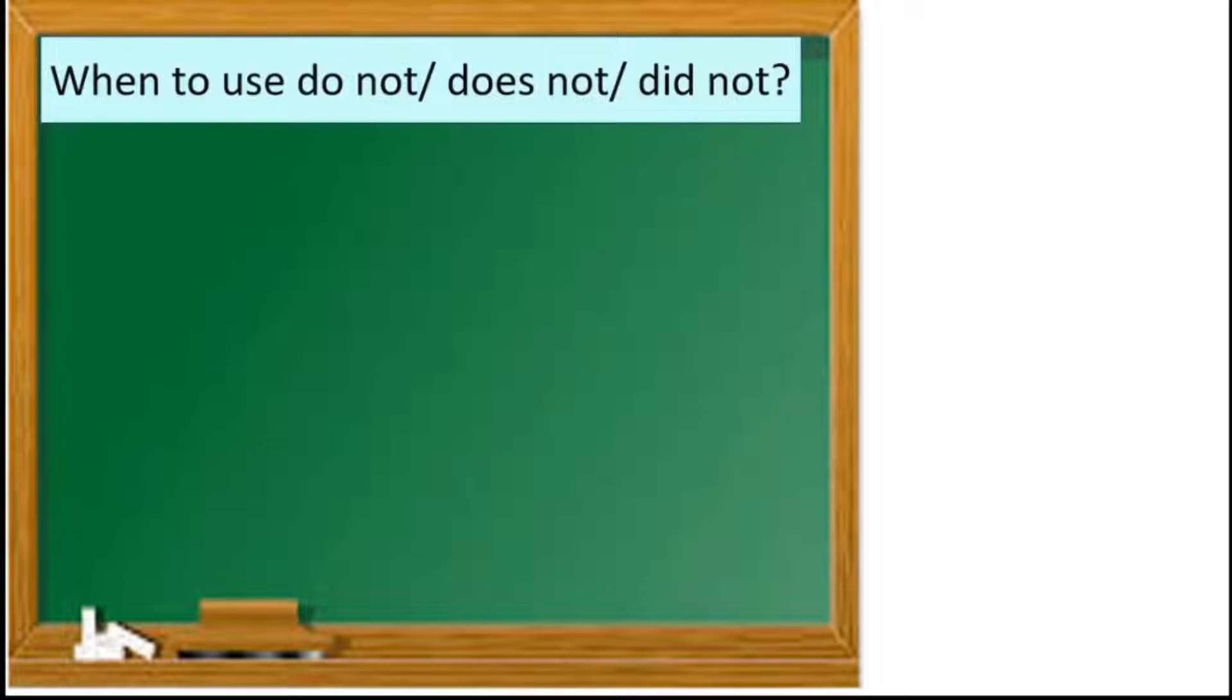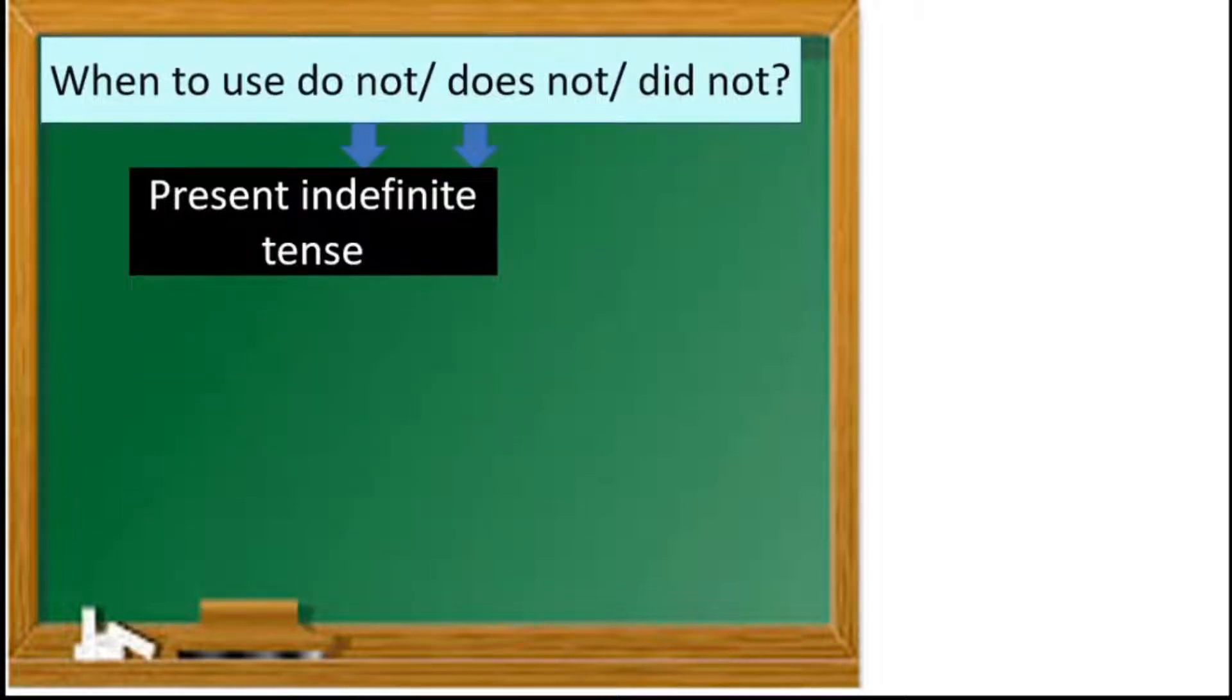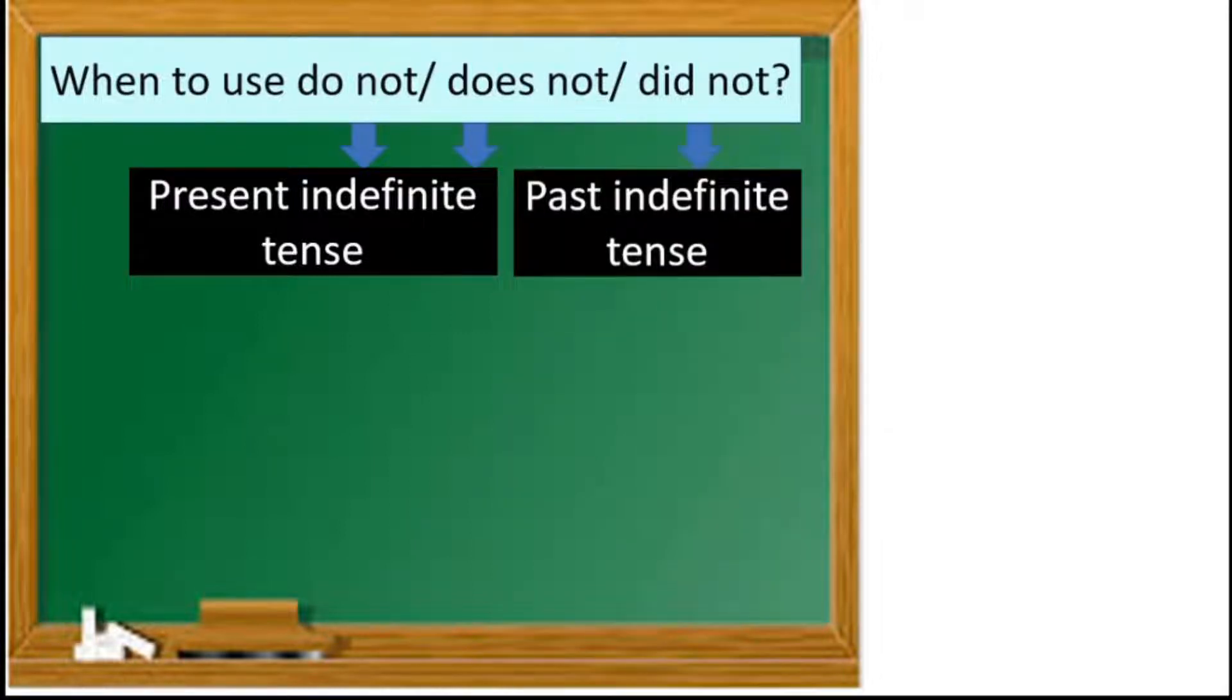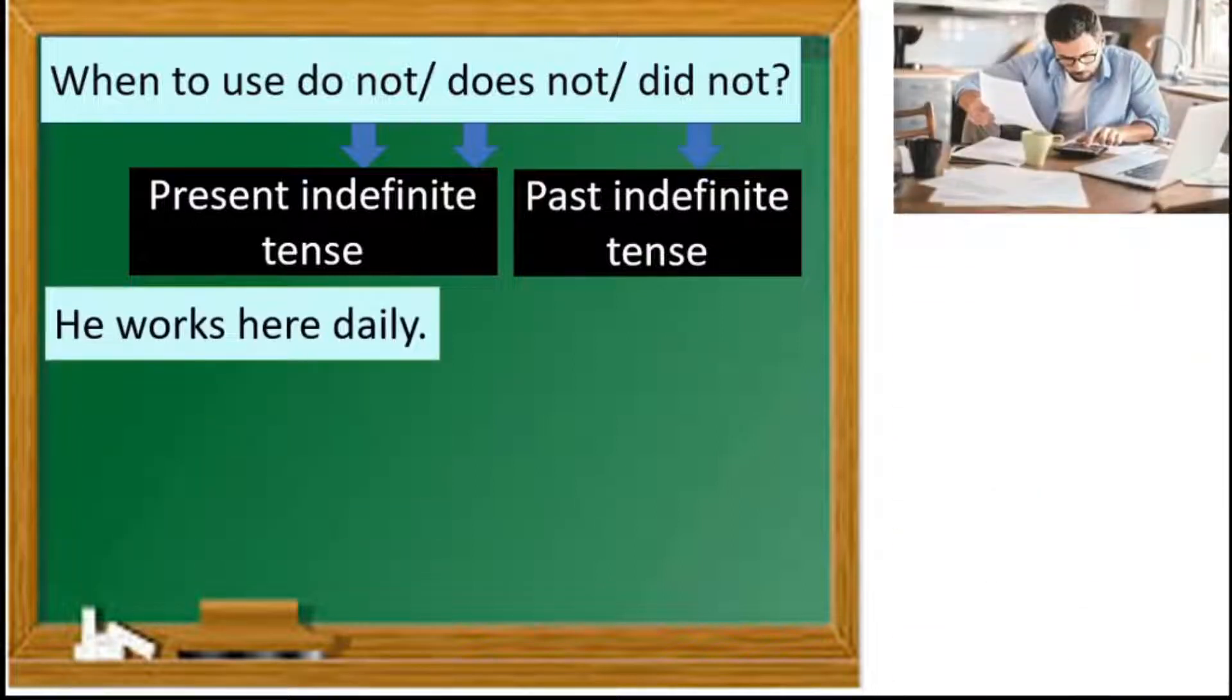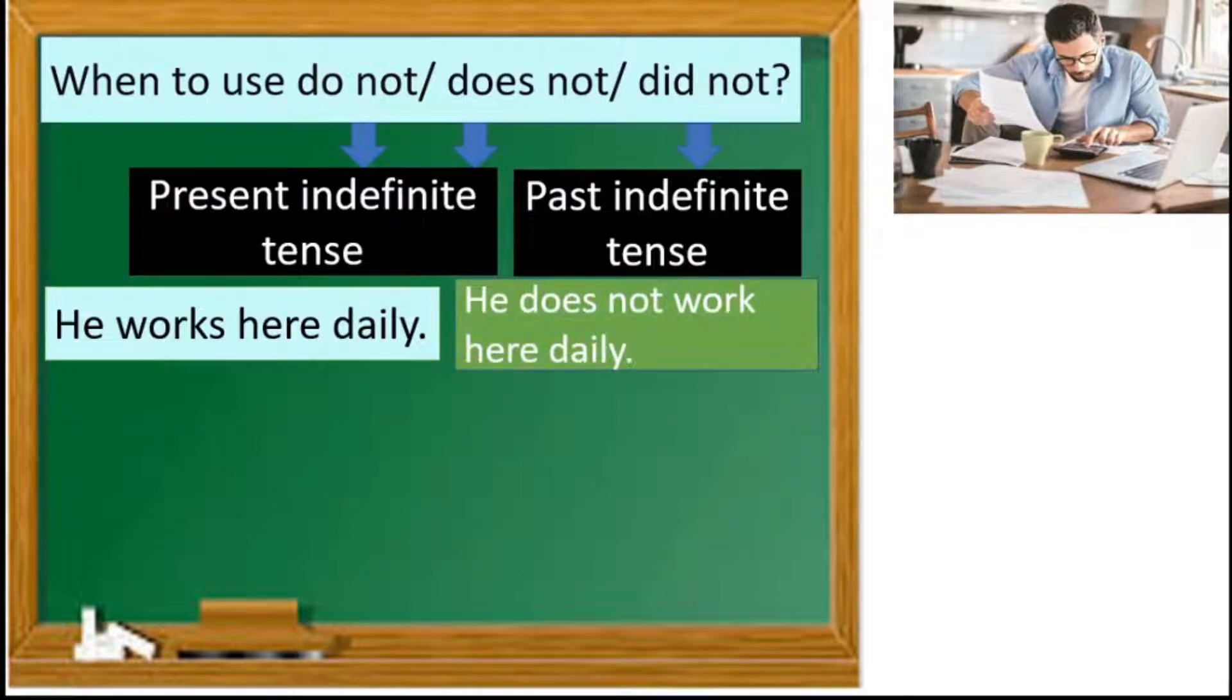So let us learn when to use do not, does not, and did not. Children, do not and does not are used in present indefinite tense, and did not is used in past indefinite tense. For example, he works here daily. He does not work here daily. You can see this is present indefinite tense. So we use does not because does is used with he, she, it, or a name.